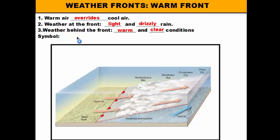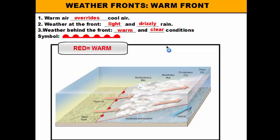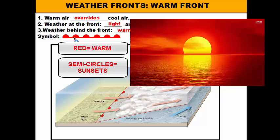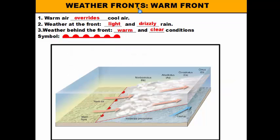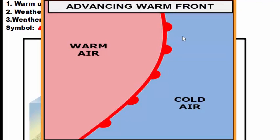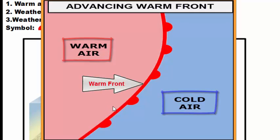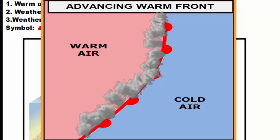When we look at a weather map, our warm front is always symbolized in red for warm and then with semicircles. One way to remember that this is a warm front: think of them as sunsets, and there's nothing hotter in our solar system than the sun. So whenever you see those semicircles, think of the sun and think of the sun being warm.